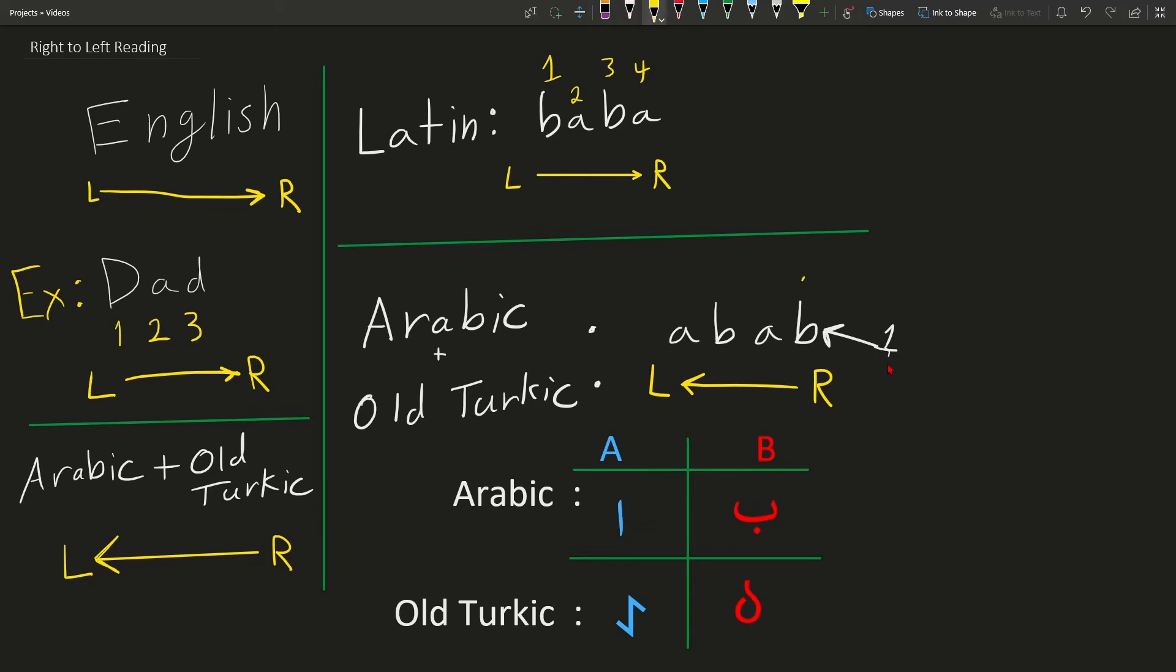So, to sequence the letters, it's one, two, three, four. And this is the principle of right-to-left reading. Not that complicated. Now, it would benefit us to look at an actual example from Arabic and in Old Turkic.